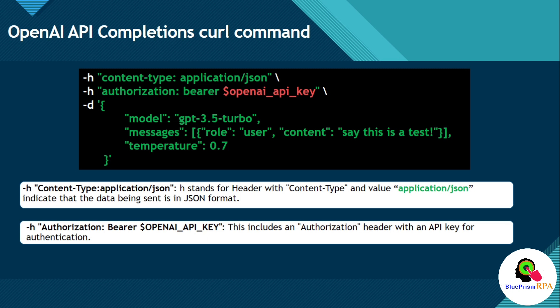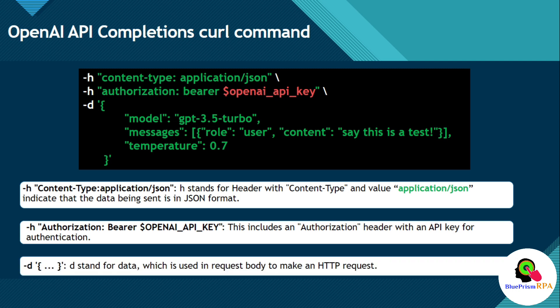We have -d, which starts and ends with curly brackets, and here we have some data like model, messages, and other things. -d stands for data, which is used in the request body to make an HTTP request.